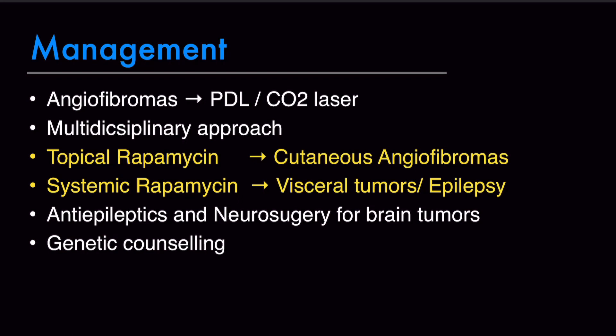For management: angiofibromas of the skin can be treated with pulsed dye laser or CO2 laser, which is an ablative laser. All concerned specialties should be involved in patient management decisions. Topical rapamycin is given for cutaneous angiofibromas, and systemic rapamycin is helpful for visceral tumors and epilepsy — rapamycin being an mTOR inhibitor, as discussed earlier. Antiepileptics are given for seizures, neurosurgery for CNS tumors, and genetic counseling is also a part of management of tuberous sclerosis complex.